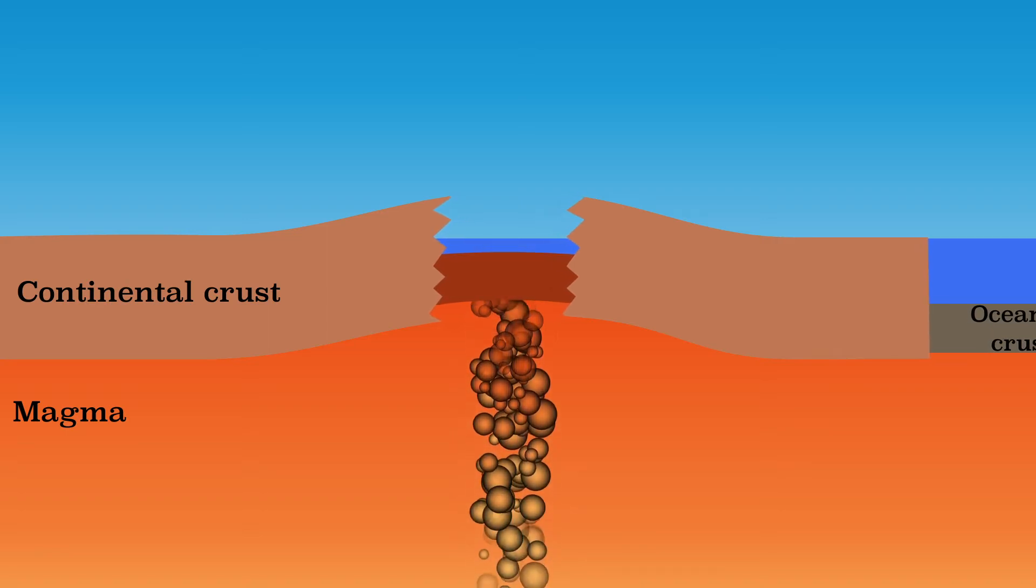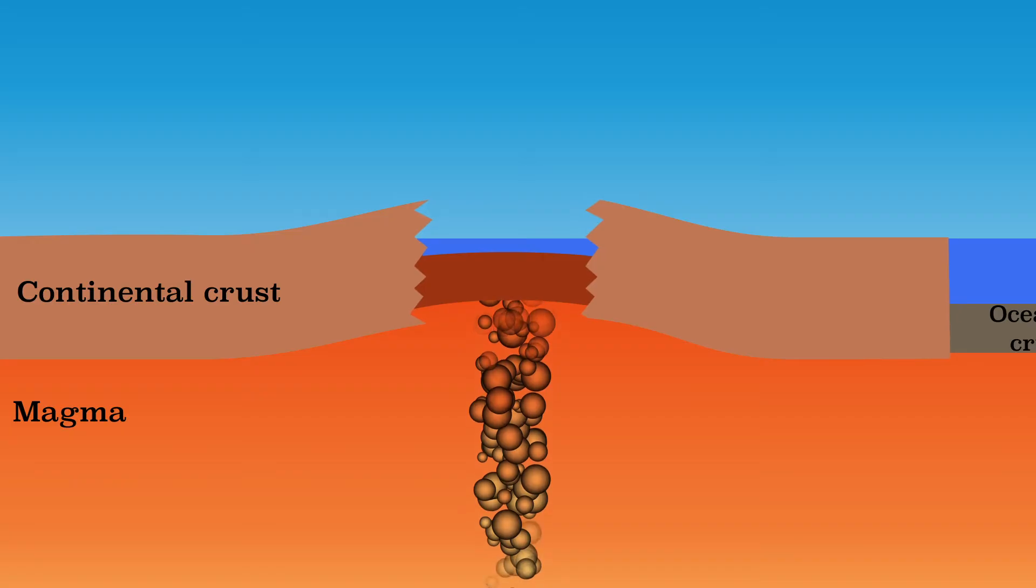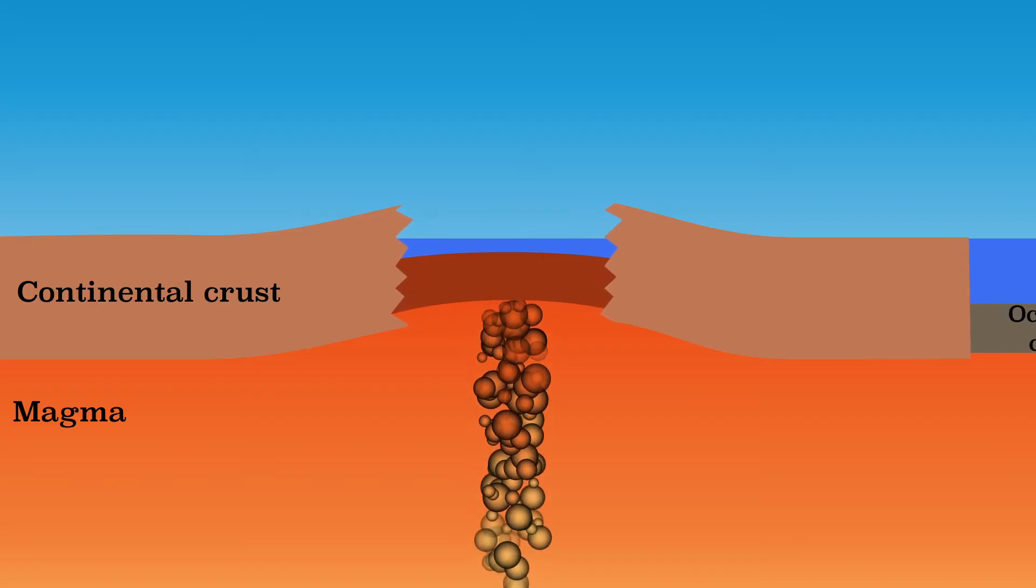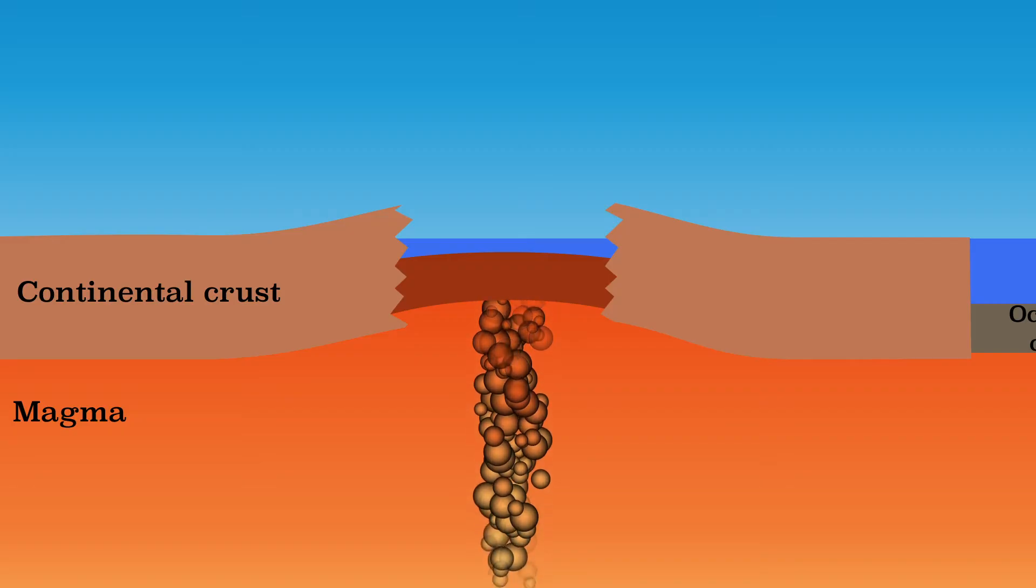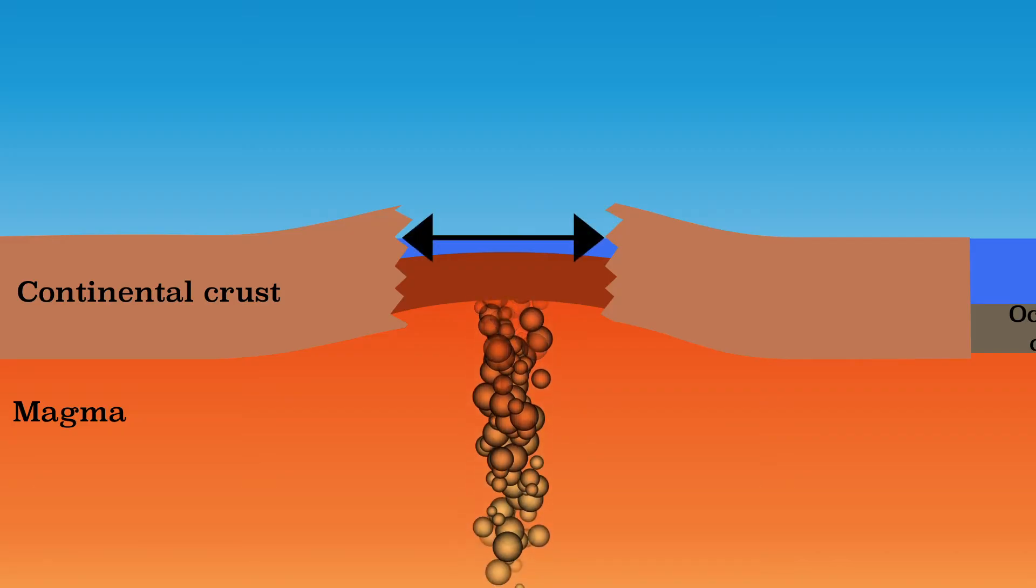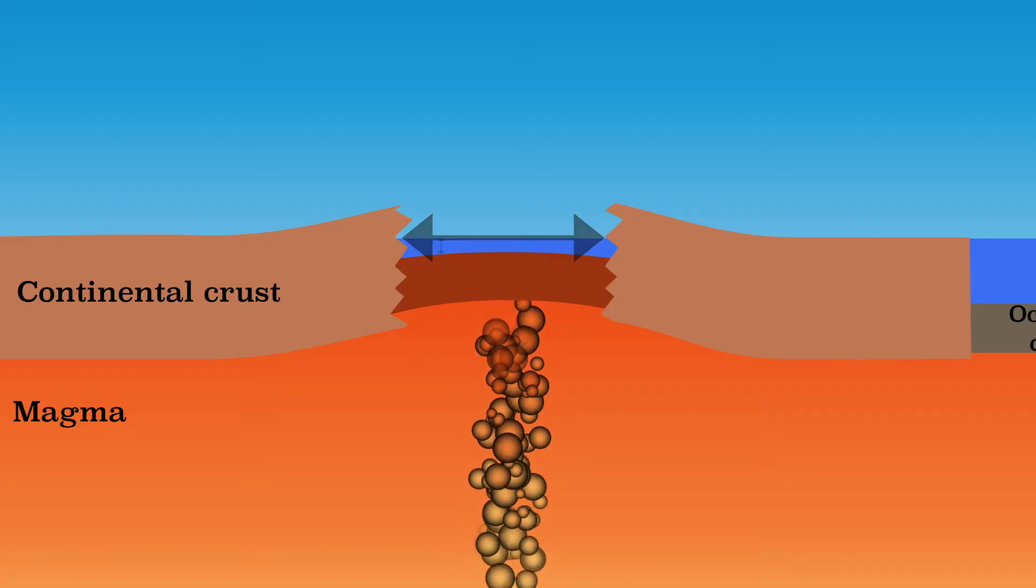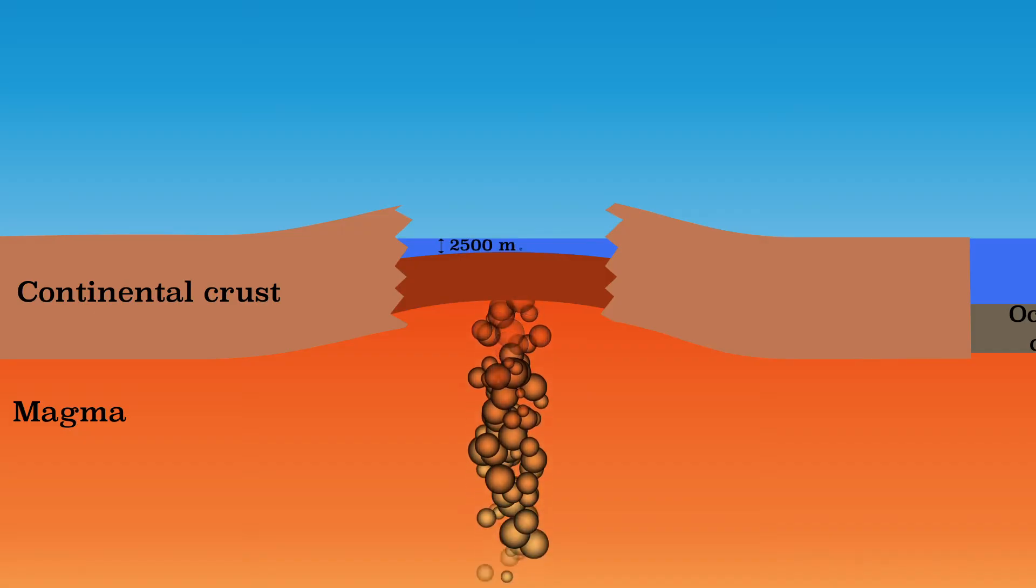If the plates keep moving apart and more oceanic crust is created, an ocean can form. The crack where oceanic crust is made sometimes lies exactly between two continental plates and therefore in the middle of the ocean. Here, the ocean is usually about 2,500 meters deep, which is relatively shallow for the ocean.